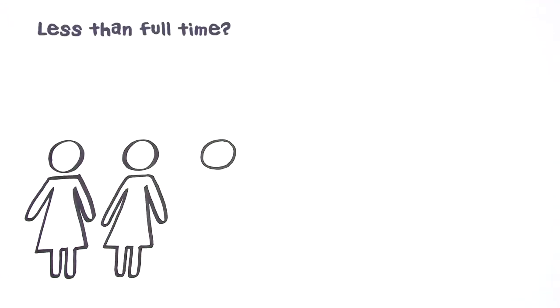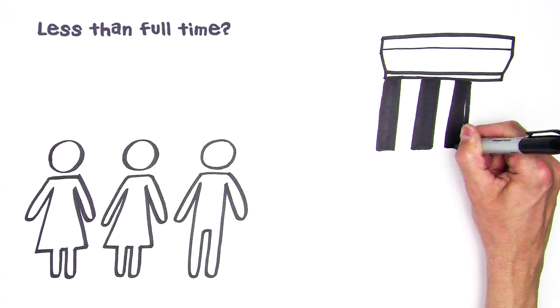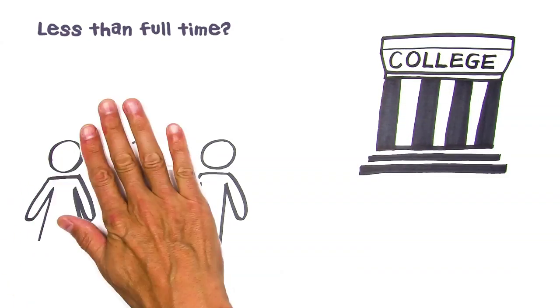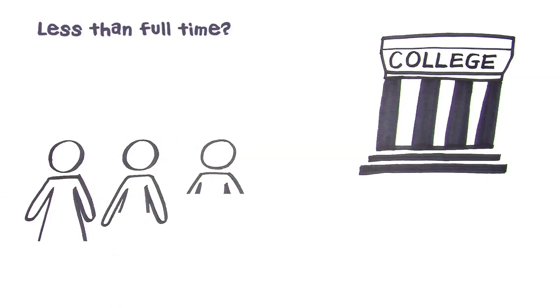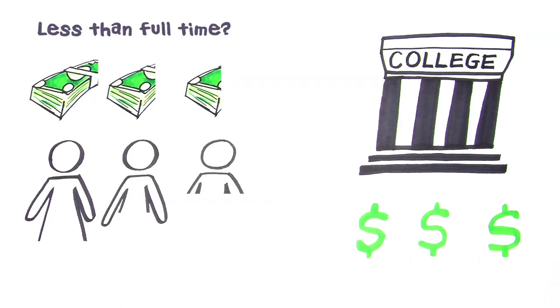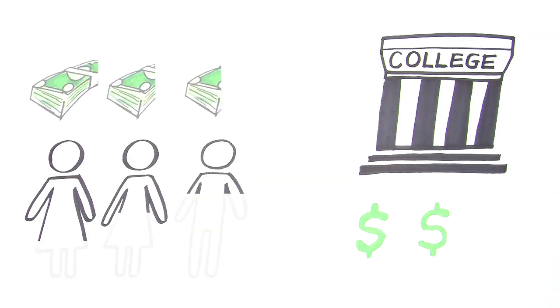What happens if a student does not attend school full-time or for a full year? Part-time students and those attending school less than a full year will receive less than a full award. A student might also receive less than a full award if the cost of attendance at their chosen institution is less than the amount they're eligible to receive.